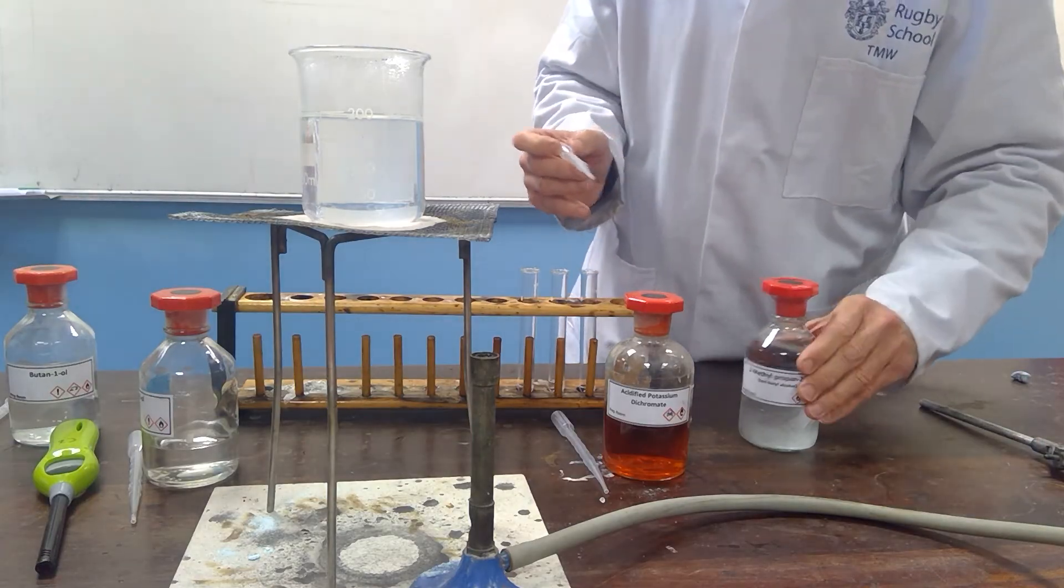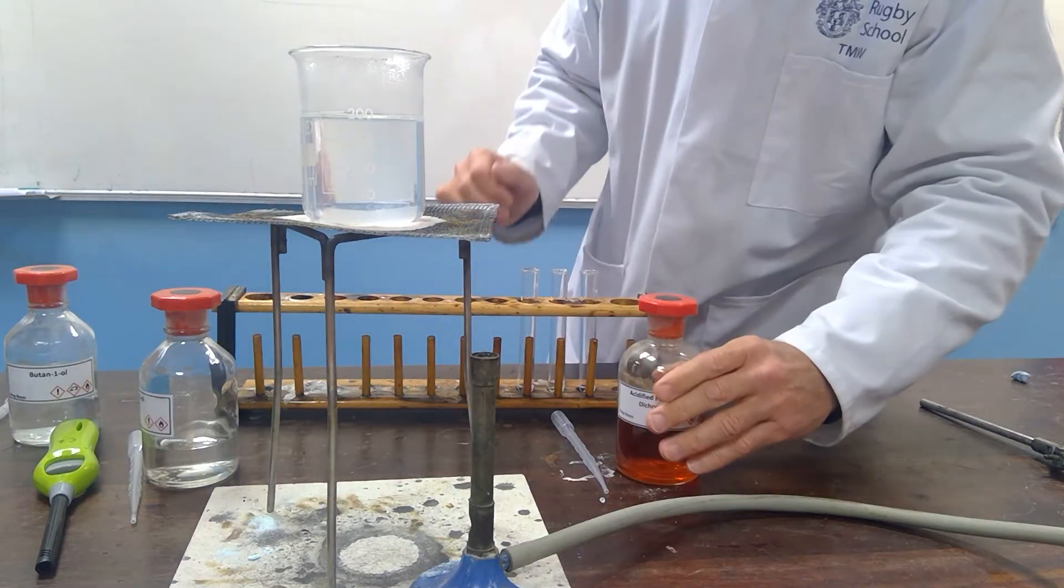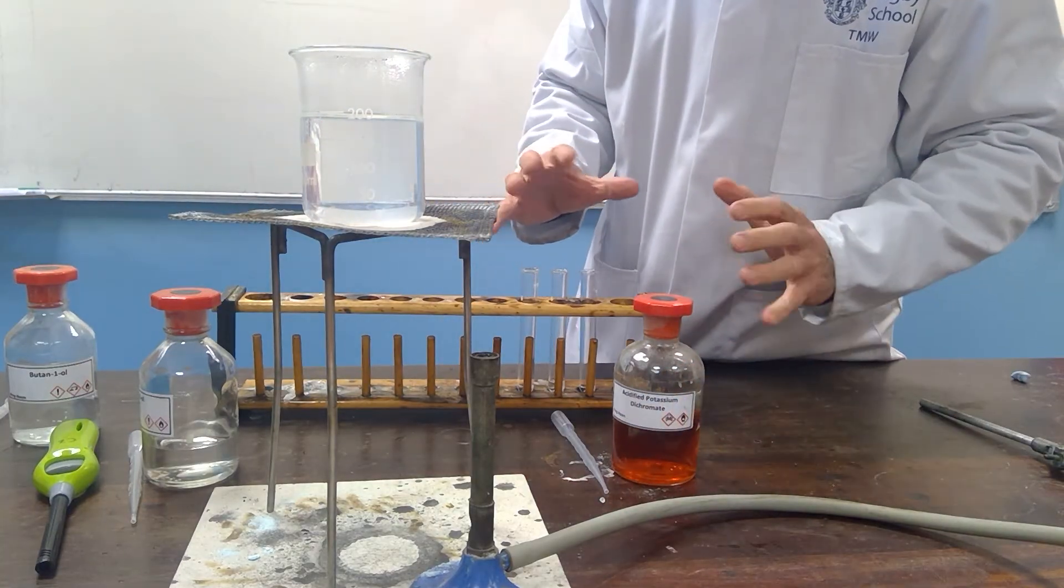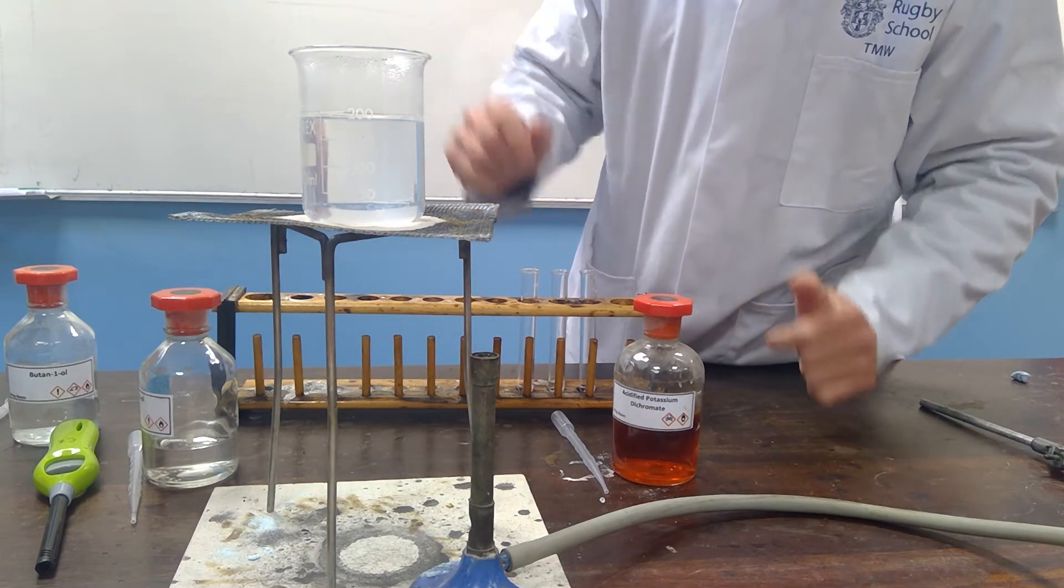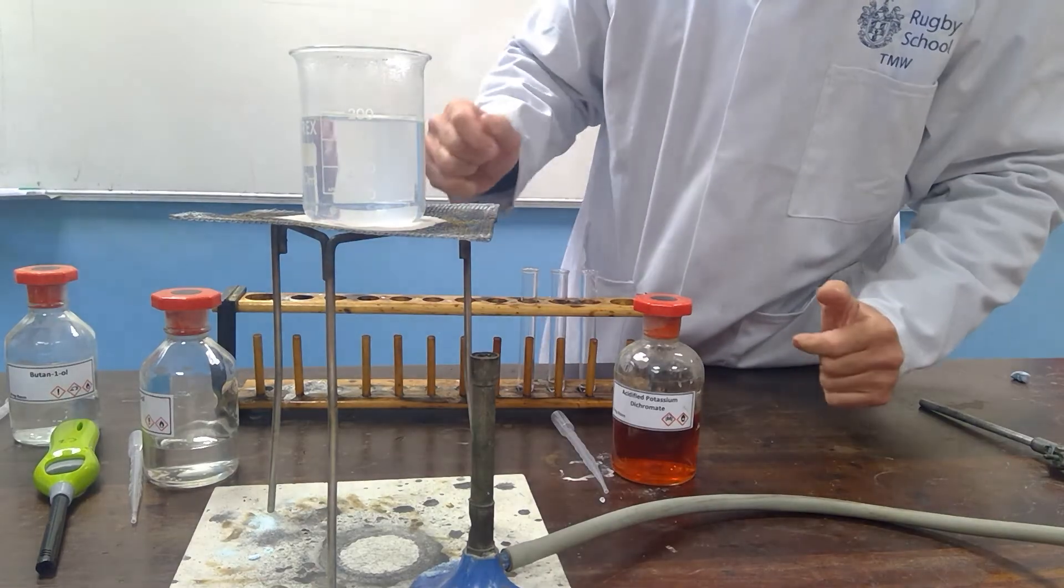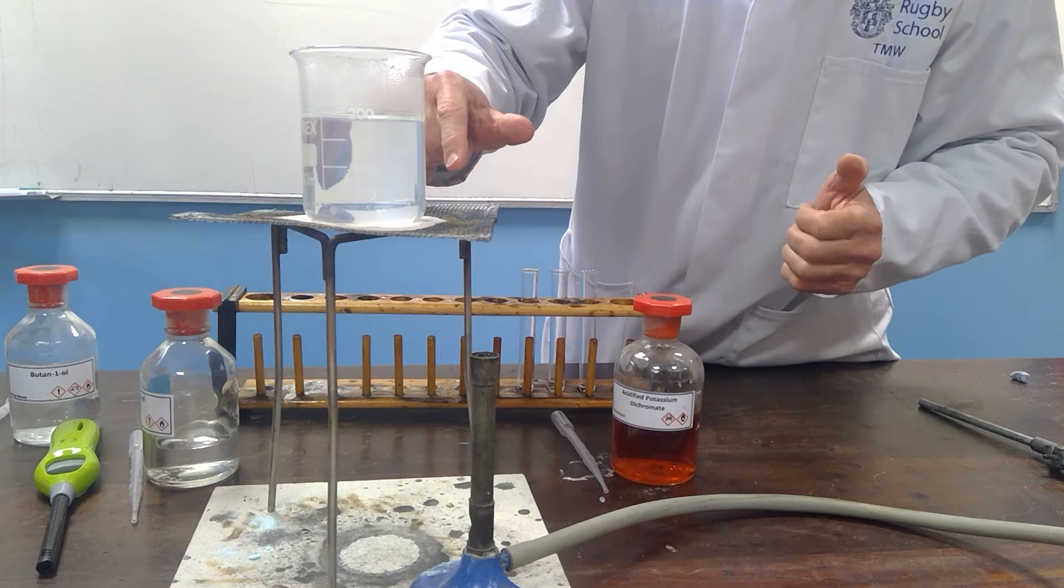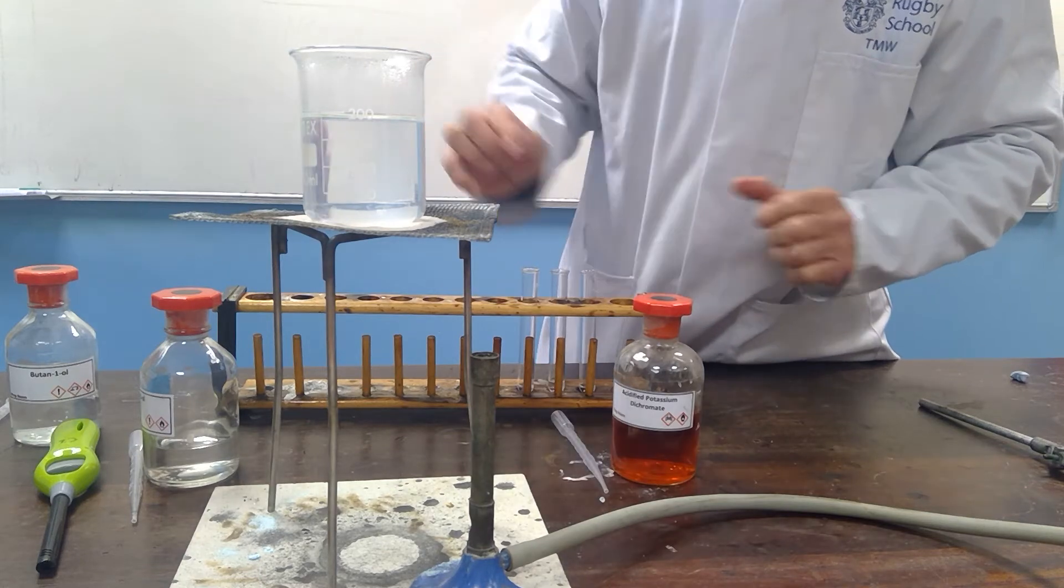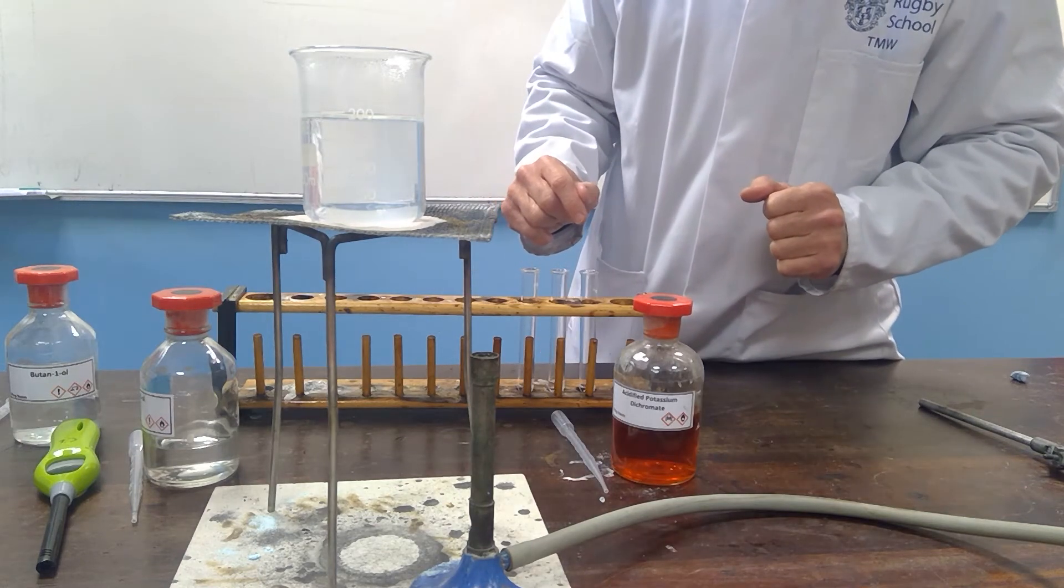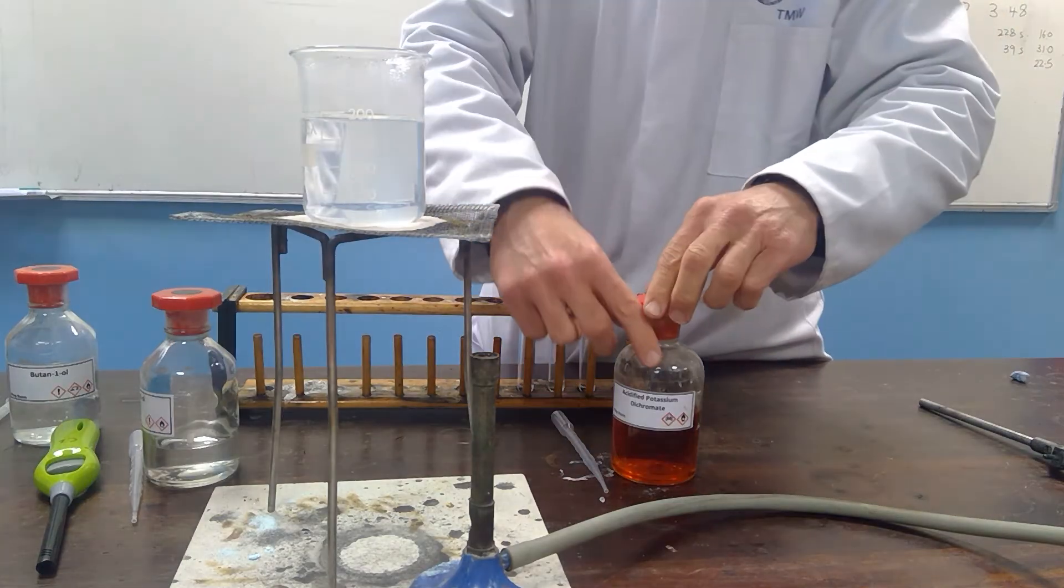So to each one of those I'm going to add some acidified potassium dichromate. There may be a sign of reaction even in the cold, but we're then going to place them into a hot water bath. It's been heated, it's up to about 80 or 90 degrees. There's no reason to go any higher because the three alcohols would boil at any temperature higher than that.